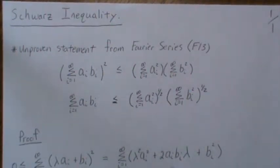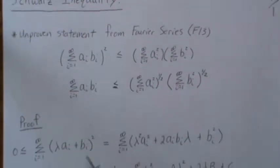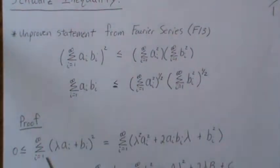And so we'll prove both of those today very quickly. So the proof goes like this. If we have the sum of lambda ai plus bi squared, that is greater than zero because we're taking a squared number and summing them, and so it's always positive.